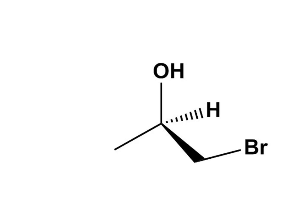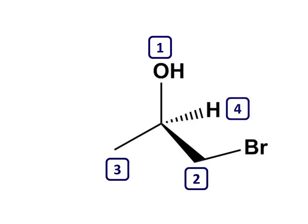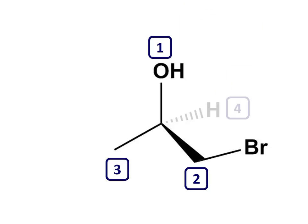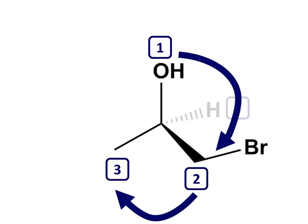Let's do one more example. Start by ranking the groups in priority order: OH, then CH2Br, methyl and hydrogen. Make sure that the hydrogen, lowest priority, is away from us. Now read the three groups that point towards you, from highest to second highest to third highest priority. This again takes us clockwise in this example, so this must be the R enantiomer.